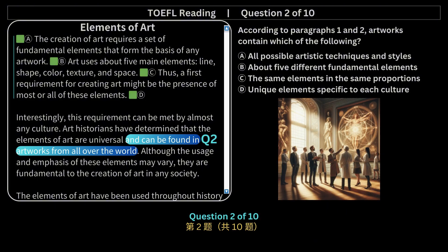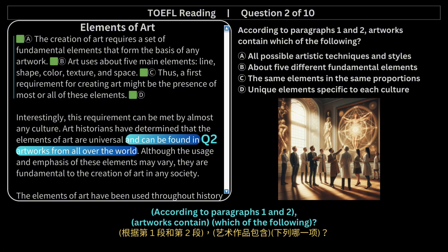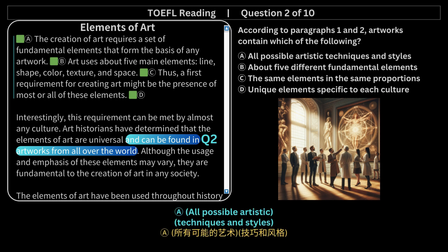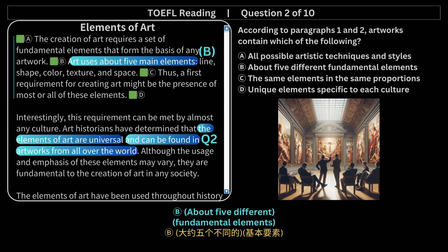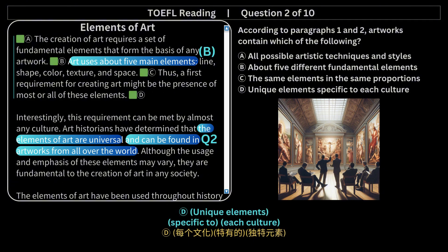Question 2 of 10. According to paragraphs 1 and 2, artworks contain which of the following? a. All possible artistic techniques and styles. b. About 5 different fundamental elements. c. The same elements in the same proportions. d. Unique elements specific to each culture.